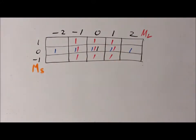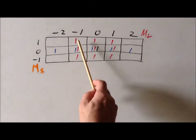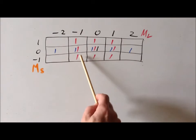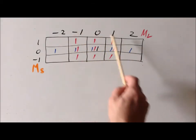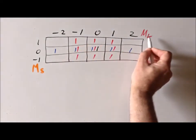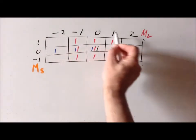I've color coded the tick marks for reasons which will become clear later on, but now we just want to concentrate on the pink tick marks. We see that there are nine such tick marks in a three by three rectangle. We notice that in this particular case the big M sub L values vary from minus one to plus one.